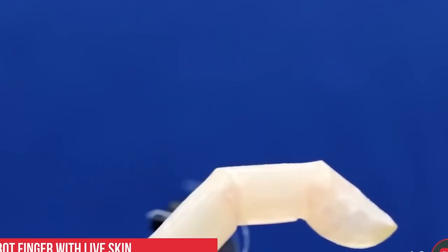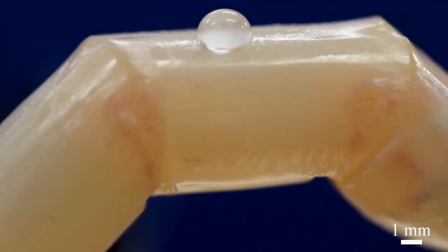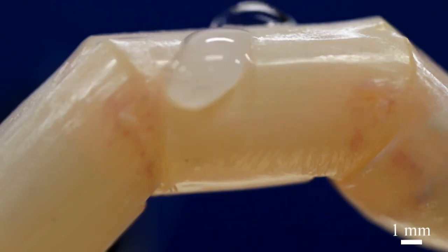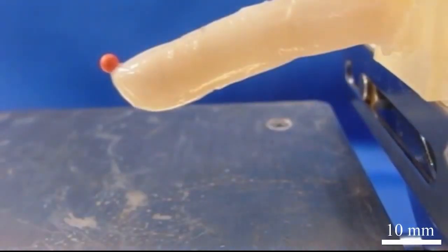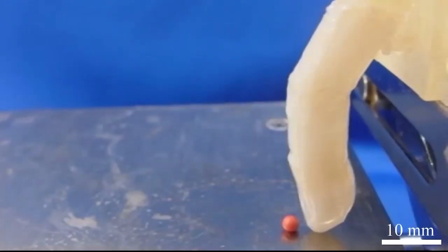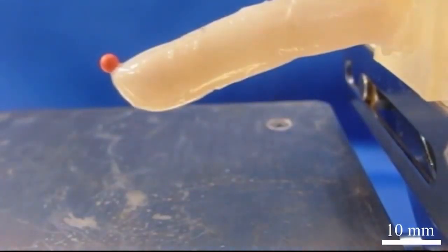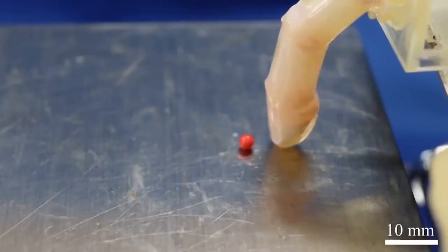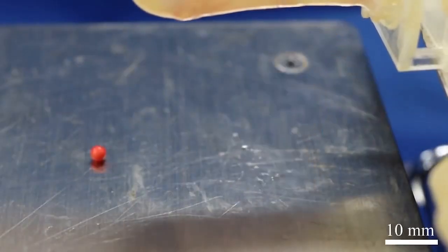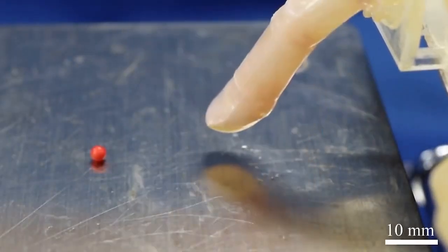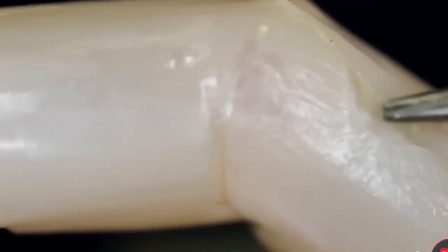The researchers went a step farther and investigated how the coating might repel water to test if the finger could flick aside a tiny polystyrene foam bead. The researchers placed the bead in front of the finger. The finger was able to flick the bead away successfully, demonstrating that its outer skin could repel water much like ours.